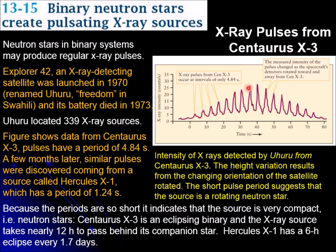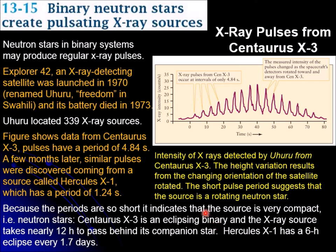The amplitude variation is somewhat artificial because the satellite was rotating and collecting data from different angles. But we can rely on the periodicity of the signal. The periods are extremely short — a few seconds — which means the source is very compact and spinning very fast. Centaurus X-3 is an eclipsing binary; the source takes 12 hours to pass behind the companion star. This x-ray emission comes from gas being dropped into a neutron star, which gets accelerated and produces x-rays.